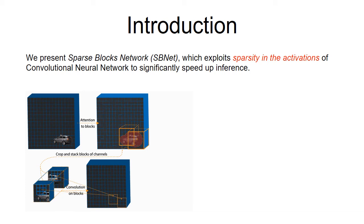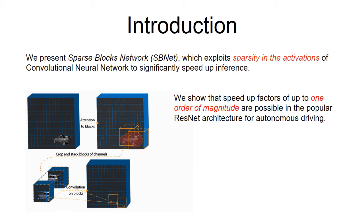We show that speedup factors of up to one order of magnitude are possible in the popular ResNet architecture for autonomous driving. SBNet allows for real-time inference with deeper and wider architectures, resulting in accuracy gains within a reduced computational budget.